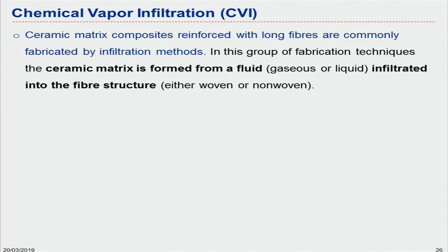CVI was developed in France in the 1960s. We place fibers — mostly suitable for long fibers — in a special device. The matrix material is in fluid or liquid form, and we use high temperature to vaporize it. Because gases and vapors have low density, they can easily travel through, or we can create a vacuum. This vaporized material passes through the fibers, and during the process some material decomposes and deposits onto the fiber surface.